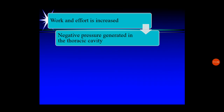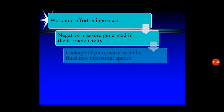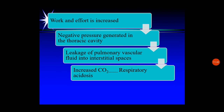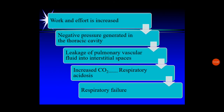In summary, the main mechanism in acute laryngotracheobronchitis is that inflammation causes narrowing of the airway, leading to the child's struggle to get air into the lungs. This results in further complications: carbon dioxide accumulation, respiratory acidosis, respiratory failure, and decreased oxygen delivery. This concludes the pathophysiology of acute laryngotracheobronchitis. We will continue in the next video. Thank you.